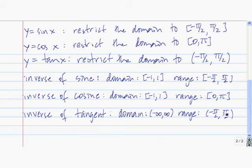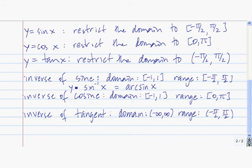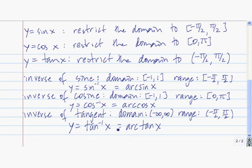Let me give you the notation for each of these. The notation for the inverse of sine is y equals sin with a superscript of negative 1, consistent with the notation for inverses in general. That's the inverse sine of x, or sometimes written as arc sine of x — these two mean the exact same thing. Similarly for cosine, it's inverse cosine of x or arc cosine of x. And the notation for the inverse of tangent is tan inverse of x, or arc tangent of x. They both mean the same thing.